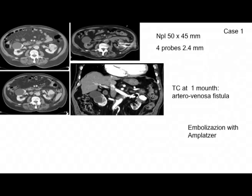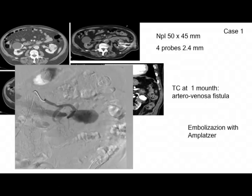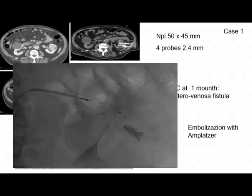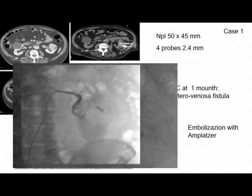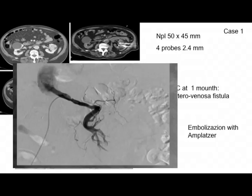Two cases. The first is a patient with a large right kidney lesion. After treatment, CT scan at one month showed an arteriovenous fistula. To repair this, embolization with radiological intervention was necessary. At the end of the procedure, the patient conserved the kidney and renal function.